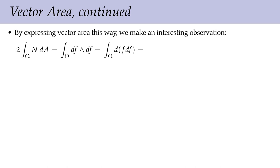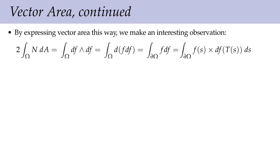Stokes' theorem! We can change this into a boundary integral, integrating over the boundary of omega of f df. This is already quite interesting: if I want to know the total normal over a surface patch, I can do that by just looking at the boundary of the patch — I don't need to know anything about the shape of the patch interior. To make this more concrete: integrating f df over the boundary is the same as walking along the boundary at unit speed, and at each point taking the position f(s) crossed with the tangent to the boundary df(T(s)), which is the push-forward of the tangent vector into three-dimensional space.